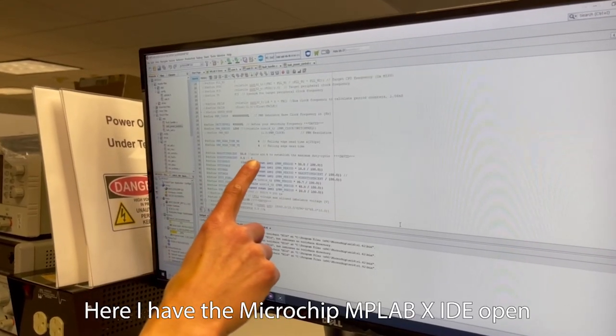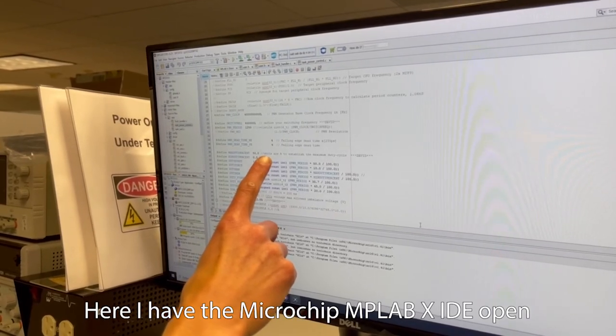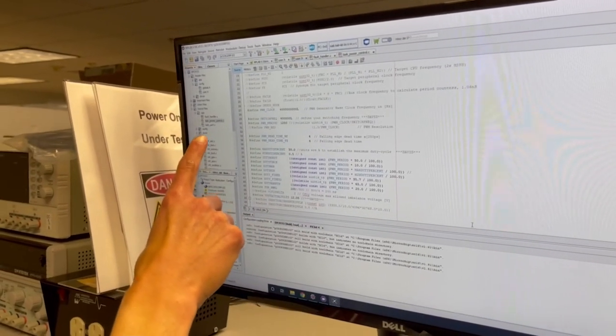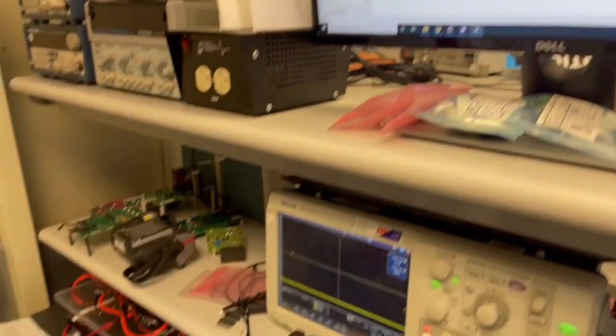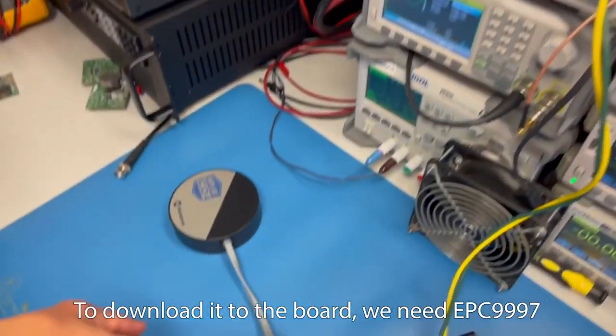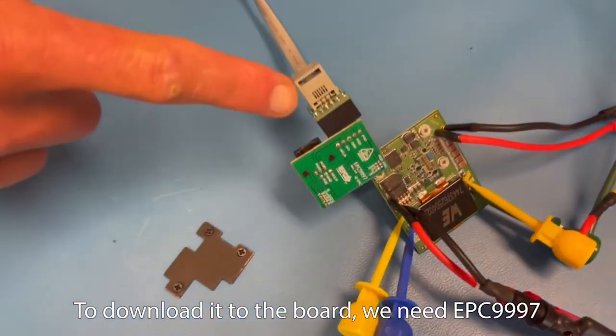Here, I have the microchip MPLABX IDE open, where the main parameters can be changed. To download it to the board, we need the EPC-9997 interface board.